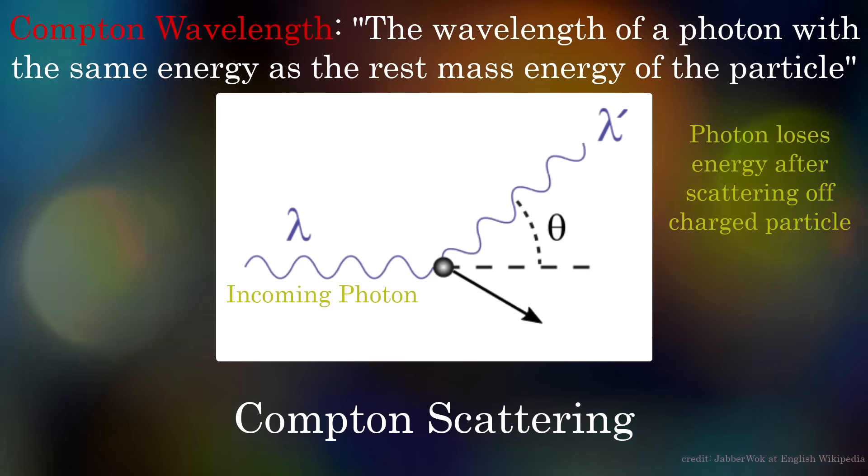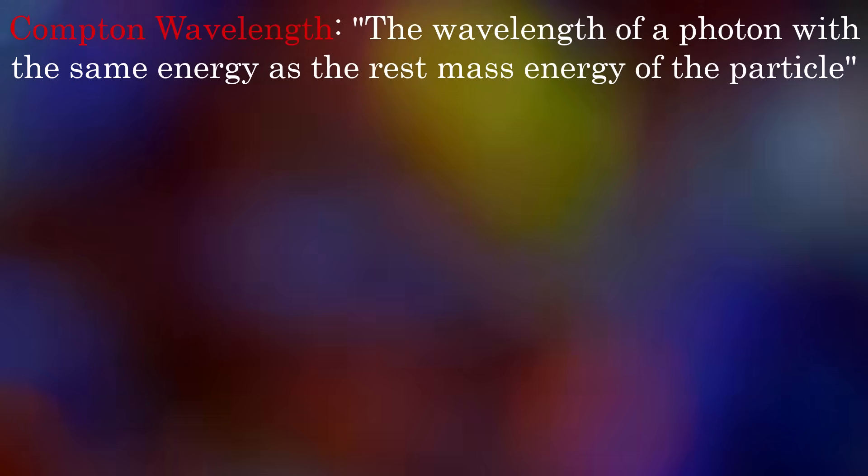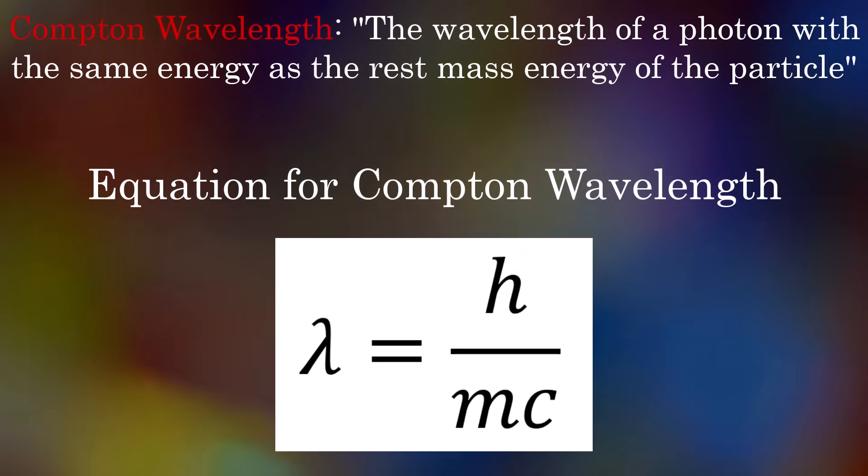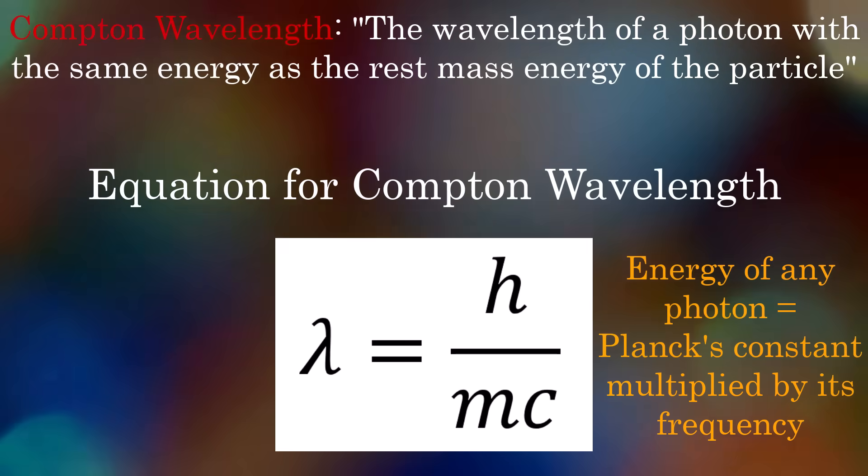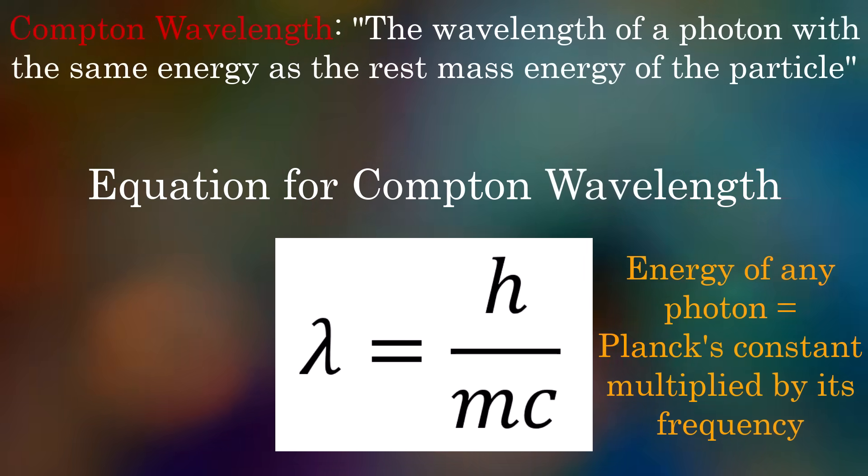whereby a photon interacts with a charged particle like an electron and loses energy. The letter H in this equation is Planck's constant, which relates the energy of a photon to its frequency. It's just a proportion, which is the same anywhere in the universe and for any photon.